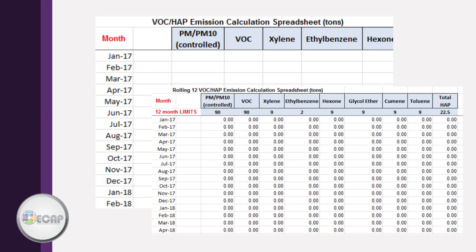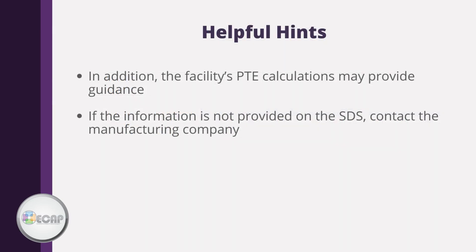The 12-month limit is given for each pollutant along with the space to record each month's emissions. Notice the units are in tons — always be sure to report in the correct units. When setting up your 12-month total spreadsheet, the facility potential emissions calculations can be used to provide emission factors and other useful information. Applicable air quality information for most products can be found on the safety data sheet; however, if needed, you can contact the manufacturing company for such information.